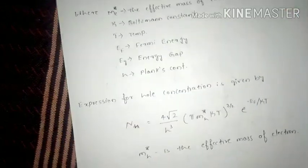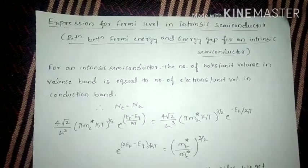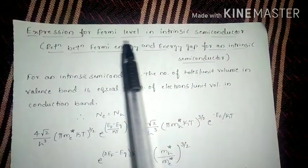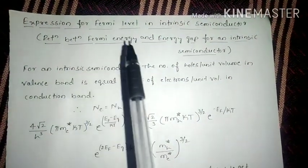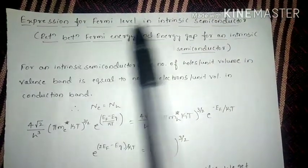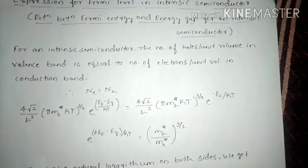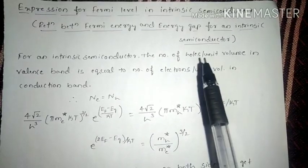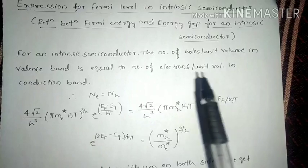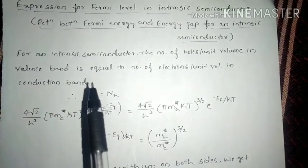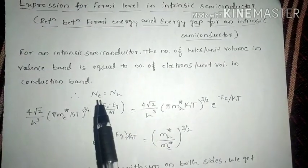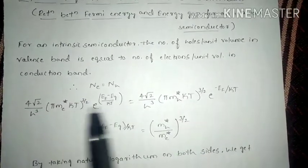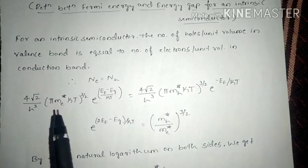We are discussing these two expressions because we have to derive an expression for the Fermi level in an intrinsic semiconductor — that is, the relation between Fermi energy and the energy gap. For an intrinsic semiconductor, since it is not doped, the number of holes per unit volume in the valence band equals the number of electrons per unit volume in the conduction band. Since we already know the expressions for these two, we can write them in terms of electron and hole concentrations.